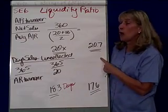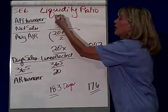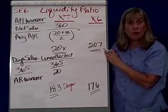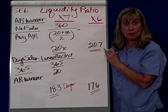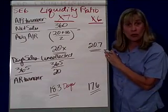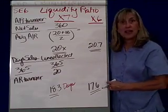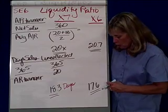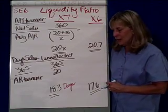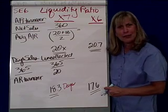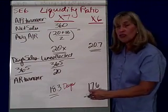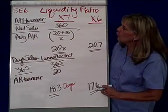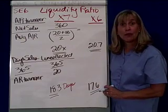Let's compare it to what we did in the previous year. What we've just done is for X7. For X6, if I find my accounts receivable turnover, I find it's 20.7 times. And if I divide that into 365 days, I see that how long it took my customers to pay me in the previous year was 17.6 days. Is this getting better or worse? It's worse — the customers are slowing a bit on their responsiveness to paying. So those are the liquidity ratios for accounts receivable.